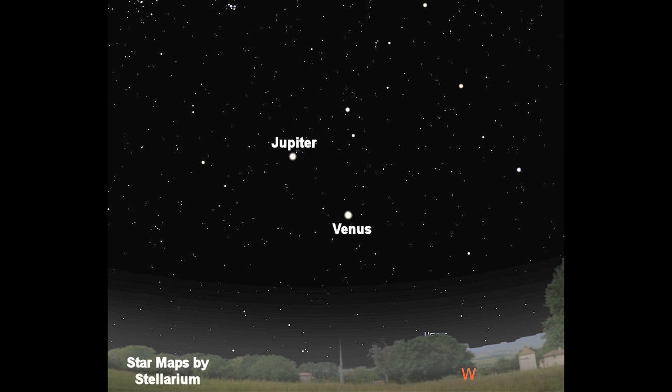Venus looks even brighter than Jupiter because of course it's closer, Jupiter much further away. But during the end of February going into March, the two planets will get closer and closer together in the sky and that's going to be a great sight to watch.